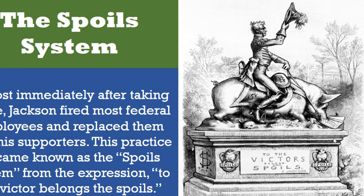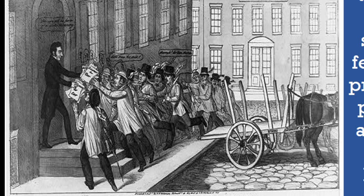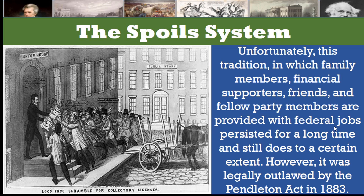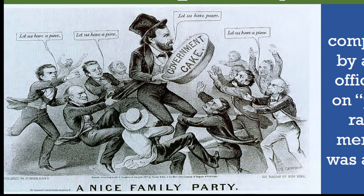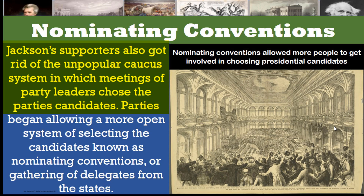This practice became known as the spoils system, from the expression 'to the victor belong the spoils.' Unfortunately, this tradition — in which family members, financial supporters, friends, and fellow party members are provided with federal jobs — persisted for a long time and still does to a certain extent. However, it was legally outlawed by the Pendleton Act in 1883. Many complained that by appointing officials based on patronage rather than merit, Jackson was acting like a tyrant. Of course, those who received those jobs loved Jackson for it.